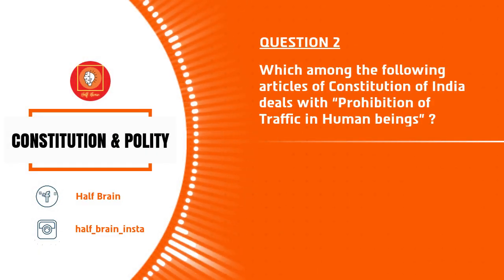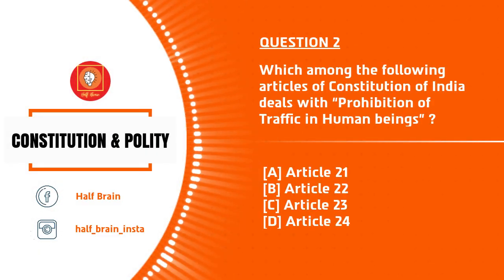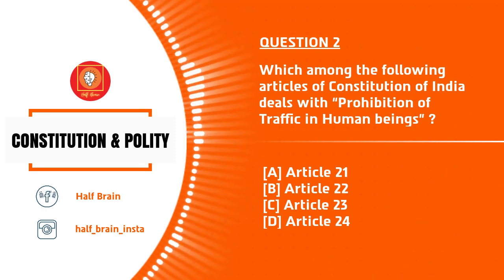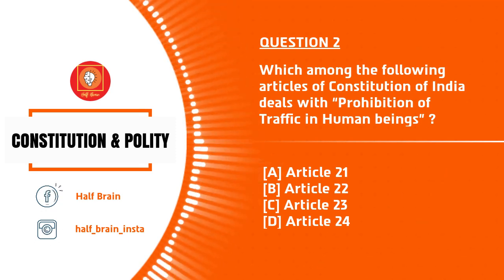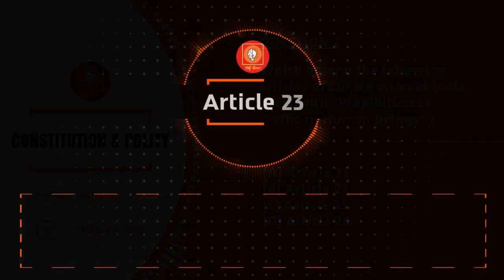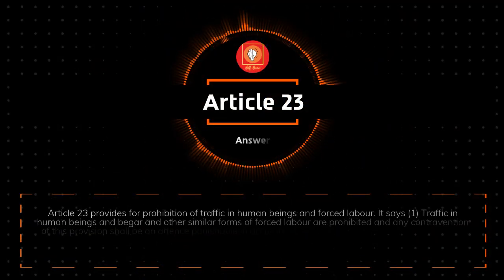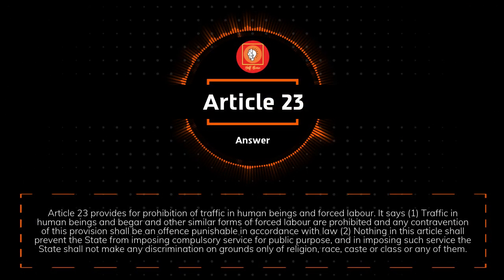Next question: Which among the following articles of the Constitution of India deals with prohibition of traffic in human beings? The options are Article 21, 22, 23, and 24. The answer is Article 23.